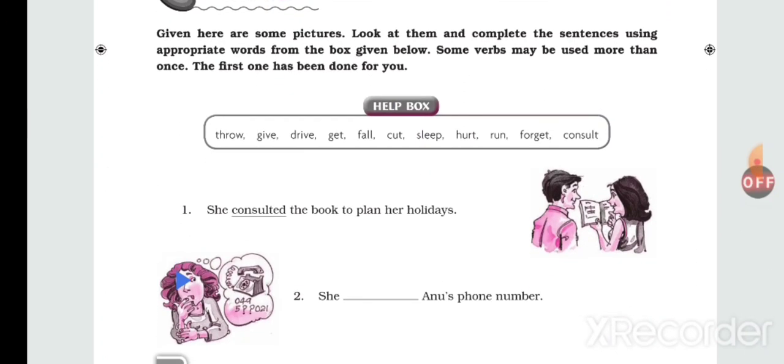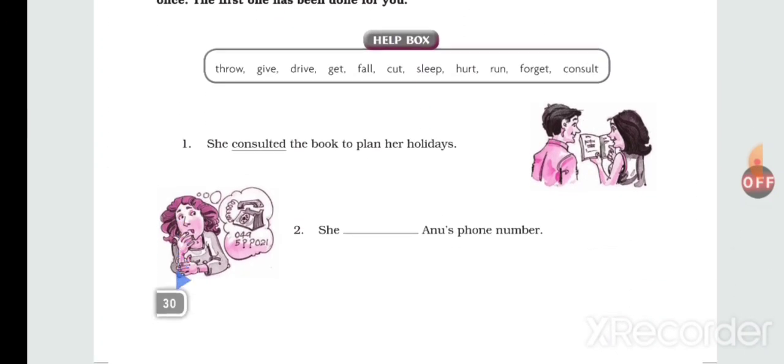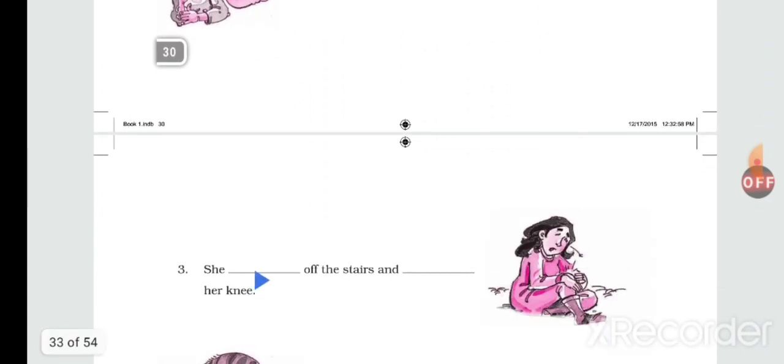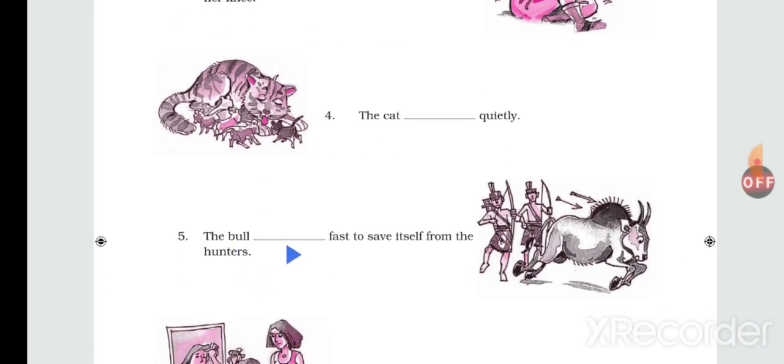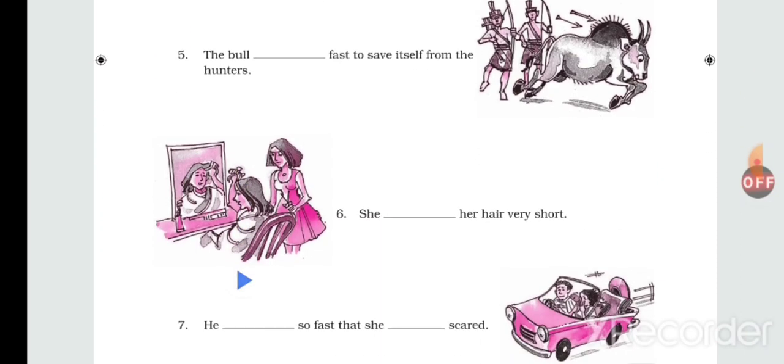Let us try. She consulted the book to plan her holidays. She forgot a phone number. She fell off the stairs and hurt her knee. The cat slept quietly. The bull ran fast to save itself from the hunters.